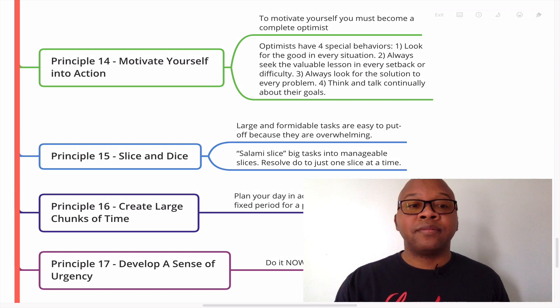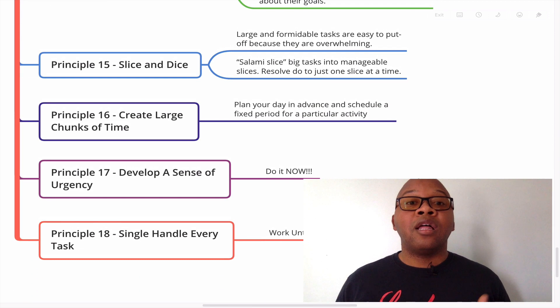Principle 15, slice and dice. Large and formidable tasks are easy to put off because they are overwhelming. But the way you can take care of those major tasks is to slice them up, slice and dice. There's the salami slice, which is big task into manageable slices. Resolve to do just one slice at a time. So how do you eat an elephant? One bite at a time. How do you deal with a major task? Well, you break it down into small steps and get the work done.